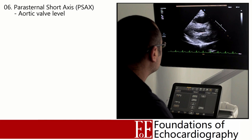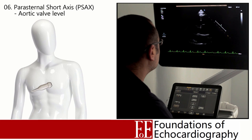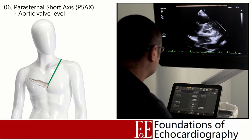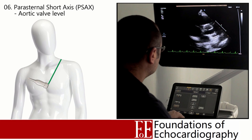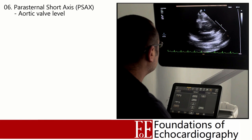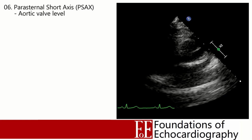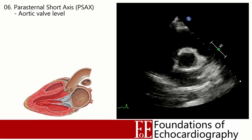Now we've finished with the parasternal long axis views, we're going to move to the parasternal short axis. Keeping the footprint of the probe in the same position, rotate the probe through its central axis approximately 90 degrees, such that the orientation marker is now pointing towards somewhere between the left mid-clavicular line and the left shoulder. A neat trick is to place the aortic valve directly in the middle of the view in the parasternal long axis, then rotate around it — this takes you straight to the parasternal short axis at the level of the great vessels.